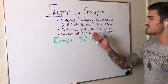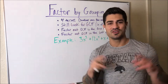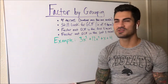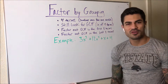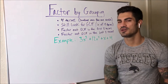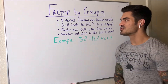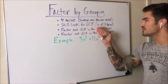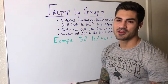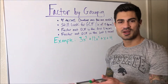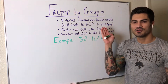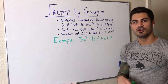So, factor by grouping. I have some notes here. The tell that you're going to use a factor by grouping strategy is that you'll see something with four terms. Sometimes there will even be more than one variable — like X and Z, or X and Y. But usually four terms means you're going to use a factor by grouping strategy.